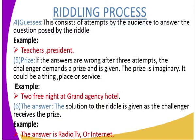For example, in the fifth stage the challenger is demanding two free nights at the Grand Agency Hotel. In the sixth stage, the answer is revealed to the audience, and the challenger receives the prize. If the audience had been able to give the answer, the riddle would have ended at the fifth stage. But because they were unable, the solution is given at the sixth stage as the challenger receives the prize.